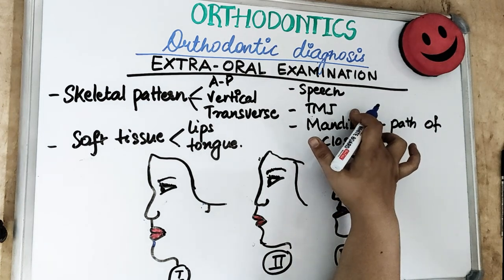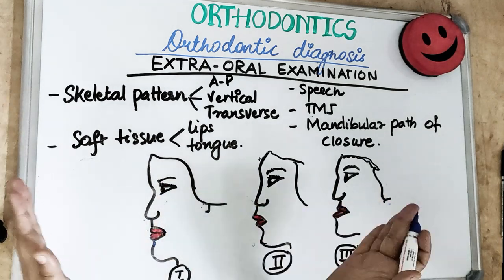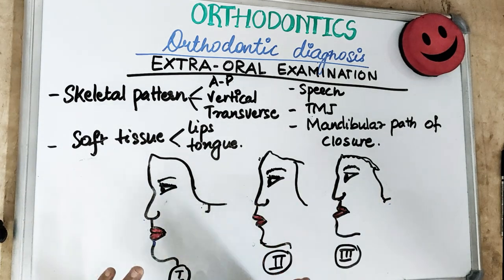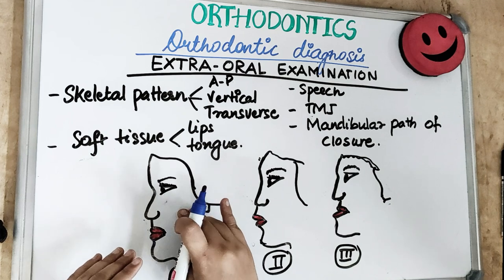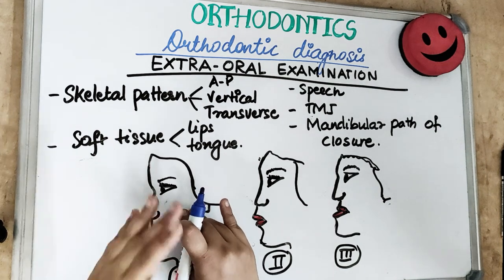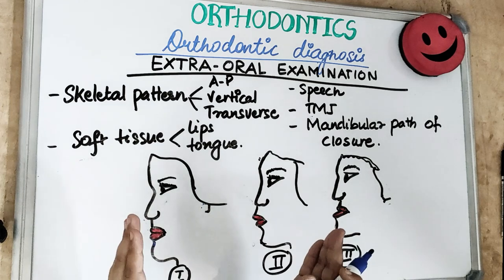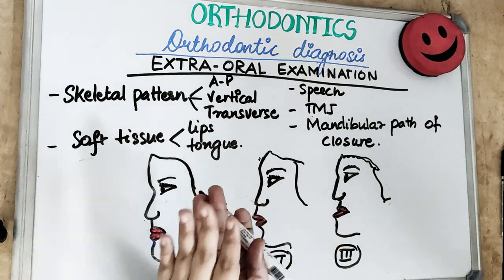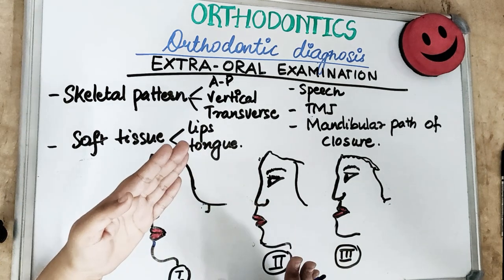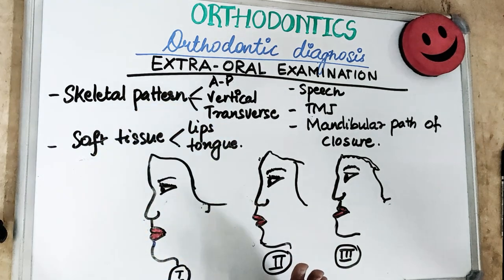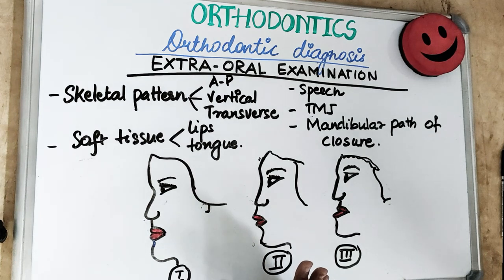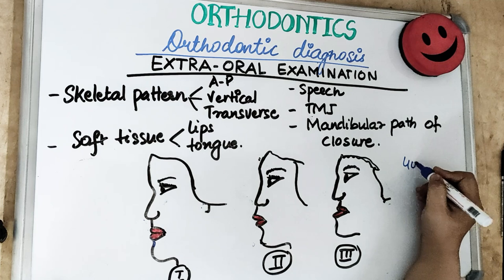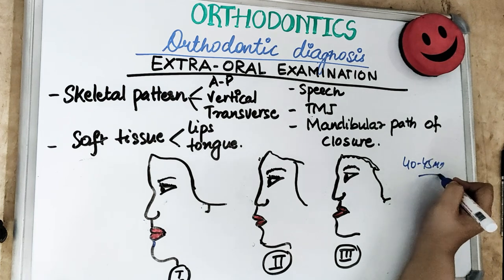For the temporomandibular joint examination, check opening and lateral movements. First observe the patient from the front, then palpate the condylar heads, and listen for any crepitus or clicking sound. Measure maximal mouth opening by asking the patient to place four fingers inside the mouth — if they can, mouth opening is normal, typically 40 to 45 millimeters for adults.